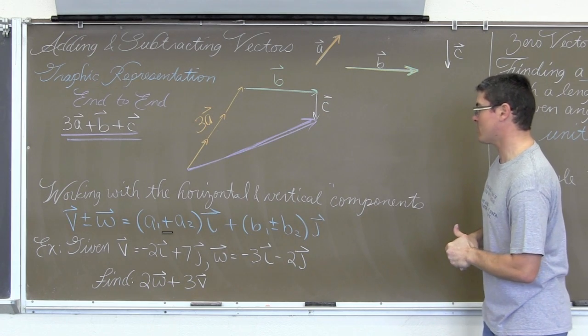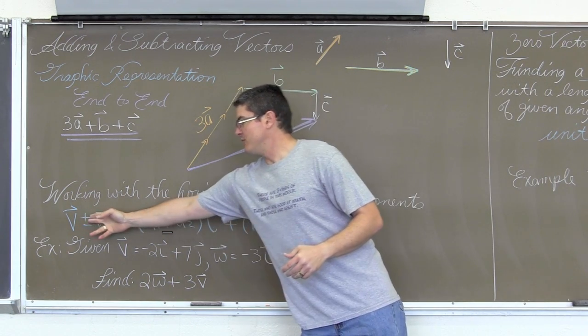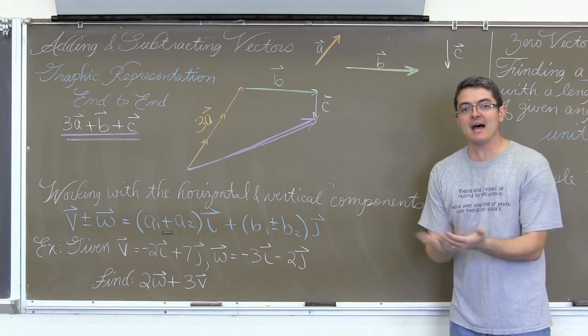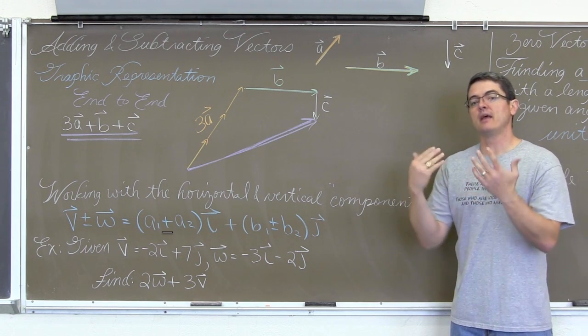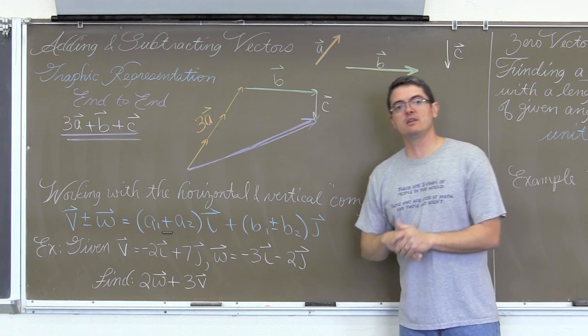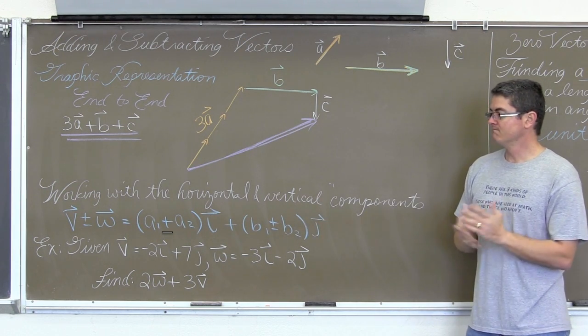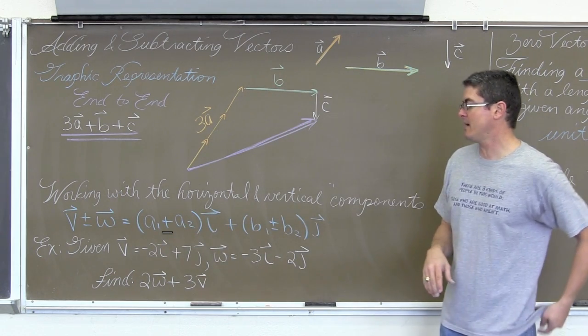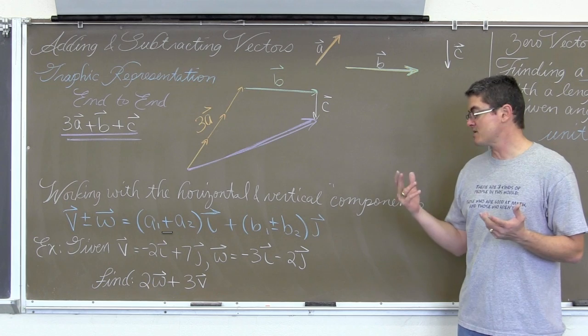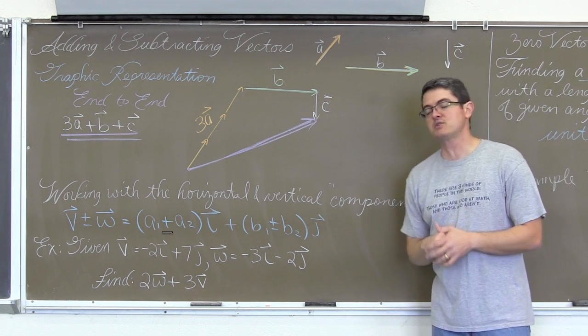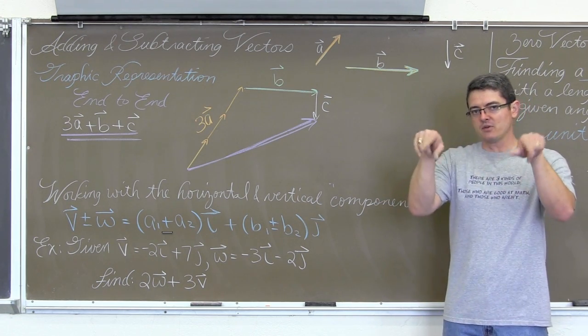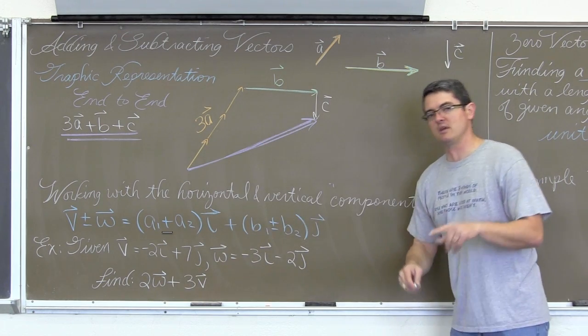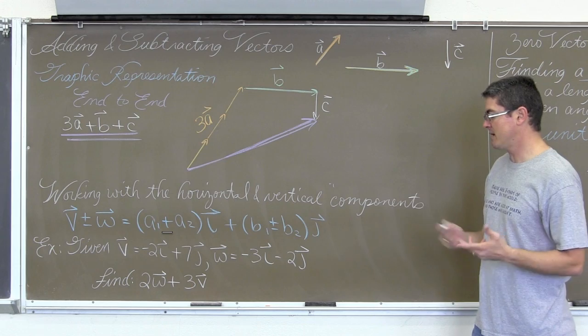Working with horizontal and vertical components. If you want to add vectors or subtract them, all you have to do is add the horizontal components, add or subtract them, and then add or subtract the vertical components. And really, it is pretty straightforward. We have vector v, it is -2i + 7j. Vector w is -3i - 2j. And you can see those again with those pointy brackets, but I am using the ij notation because my book does. I really prefer the shorthand version of this.